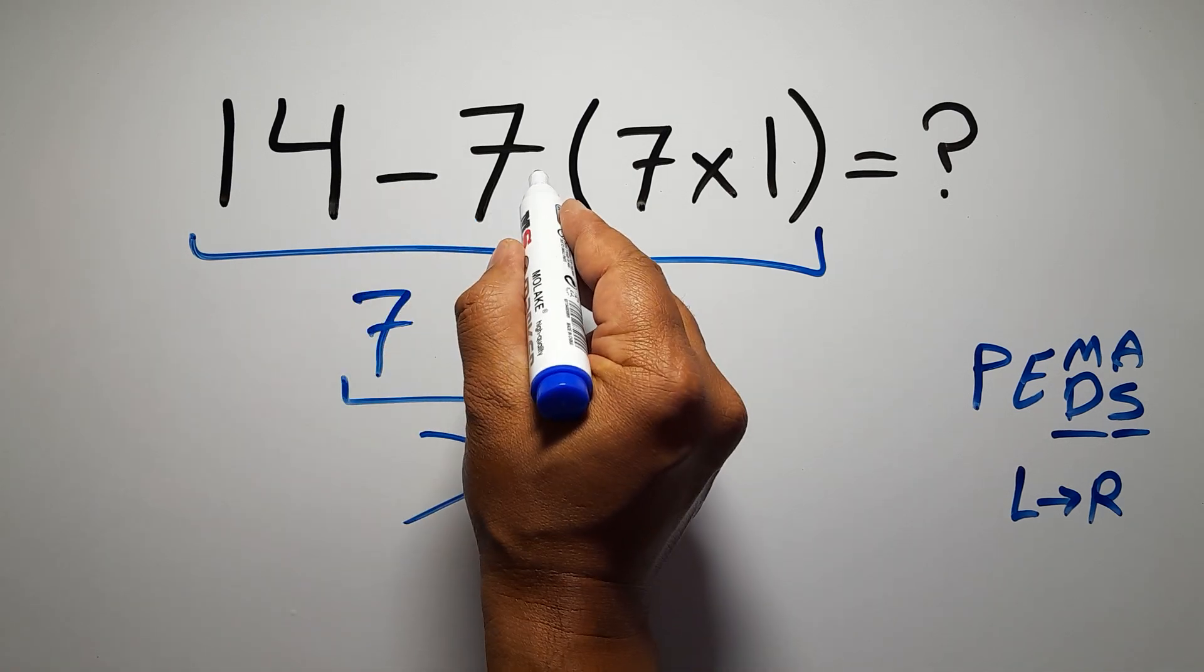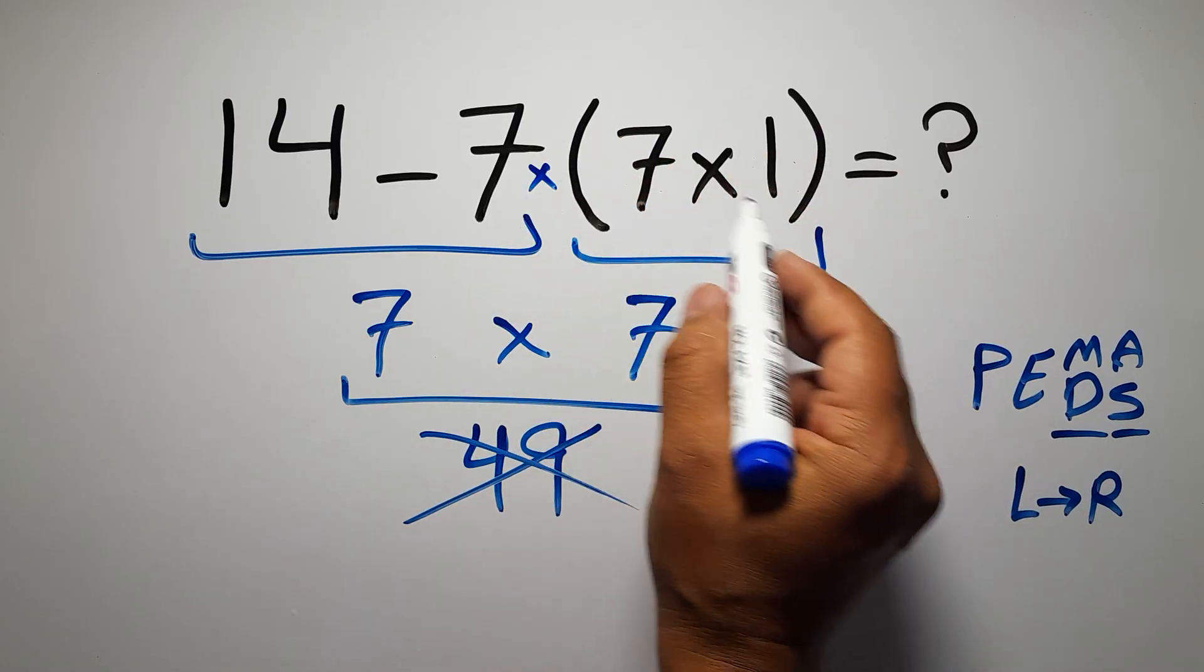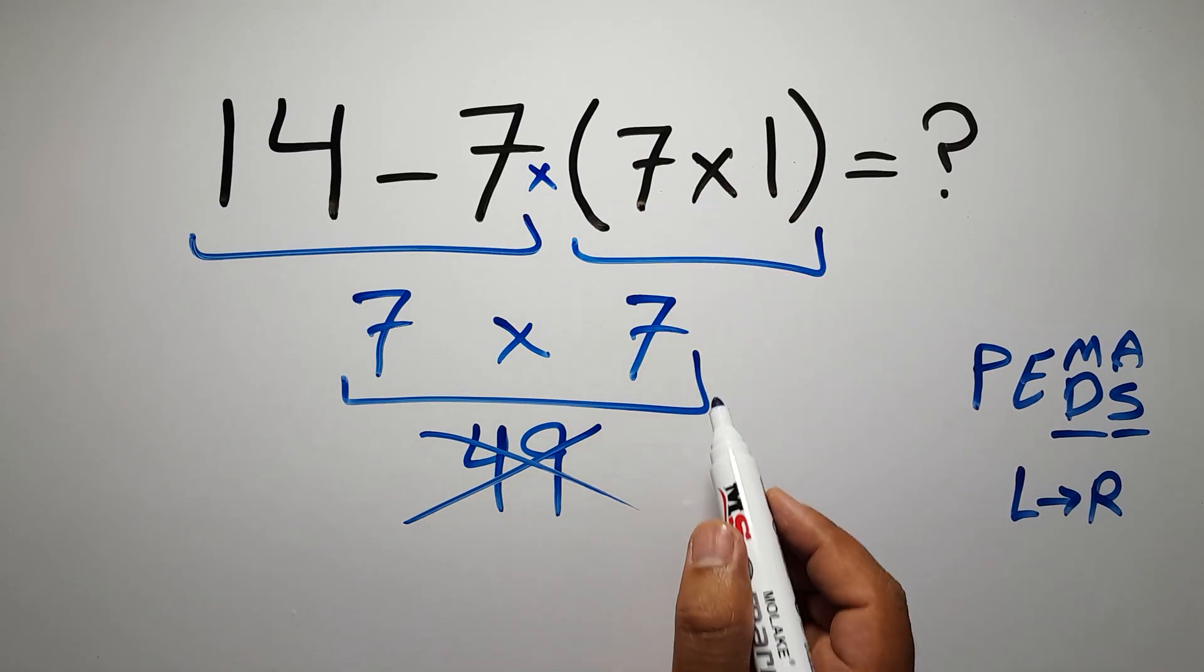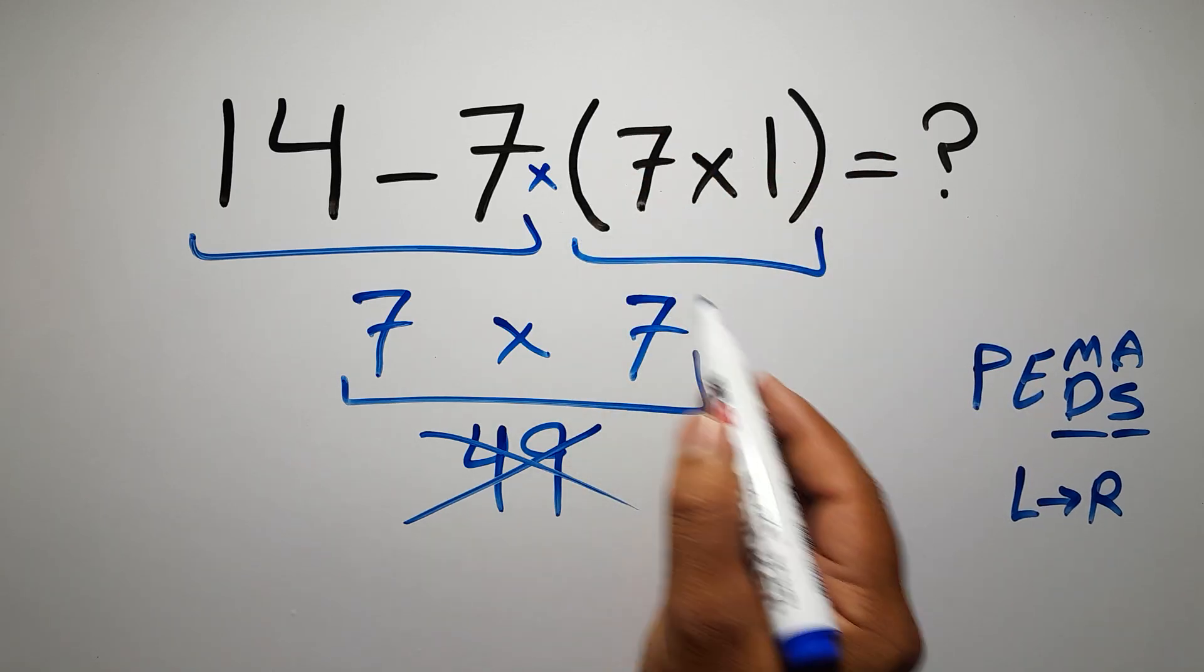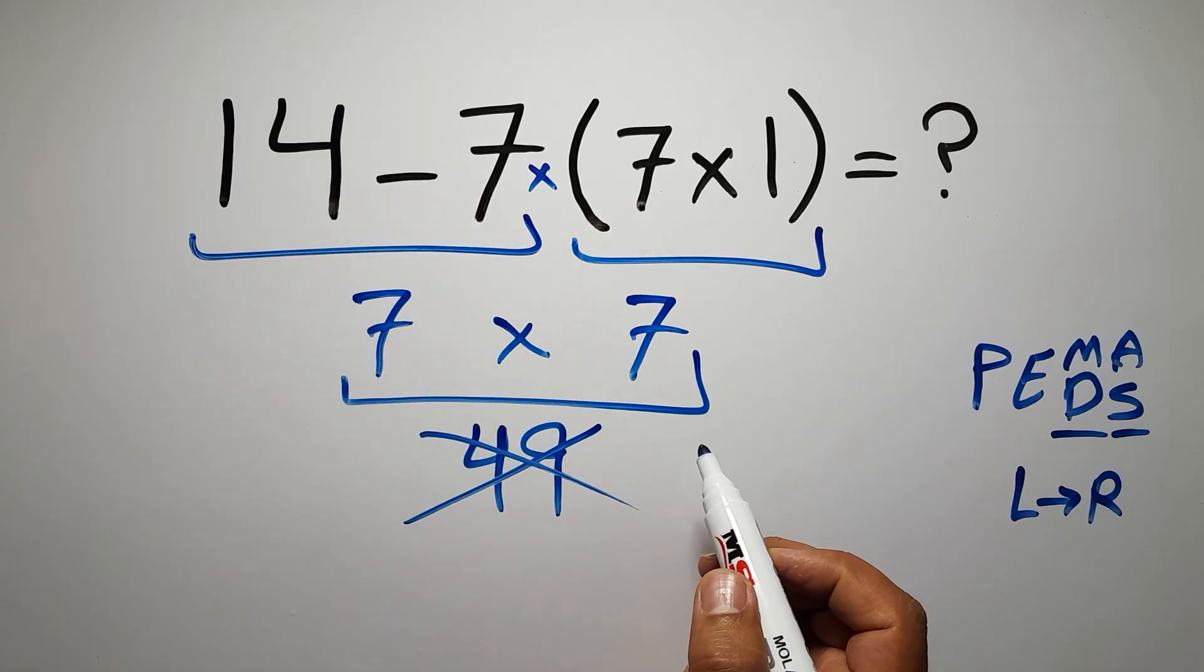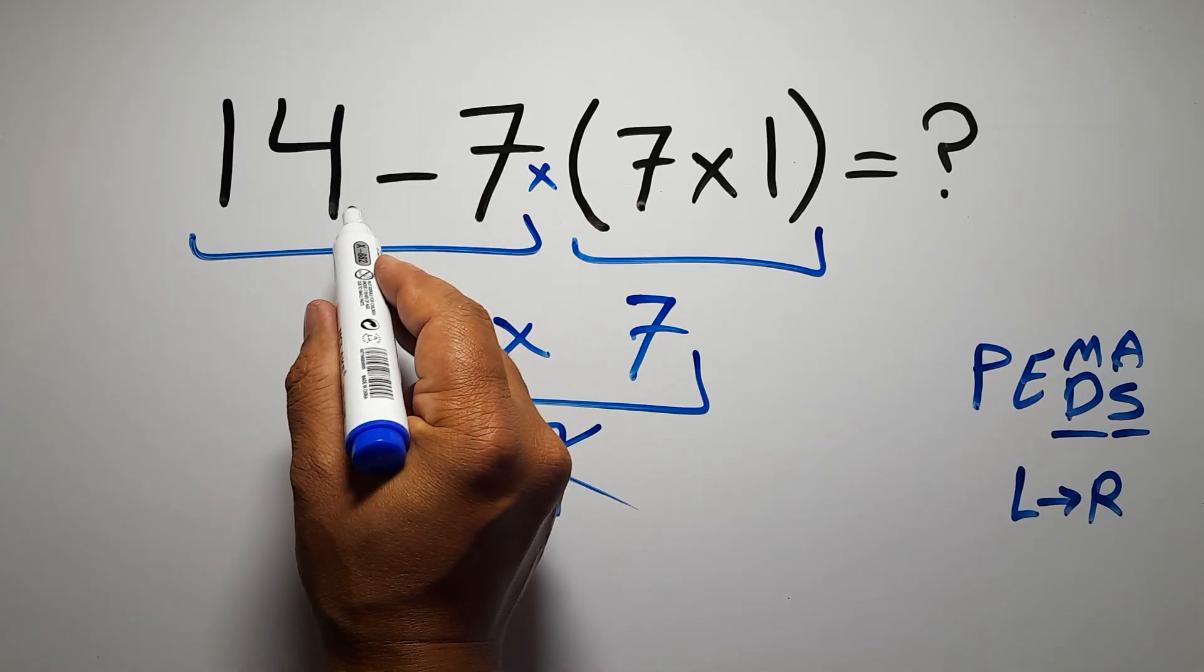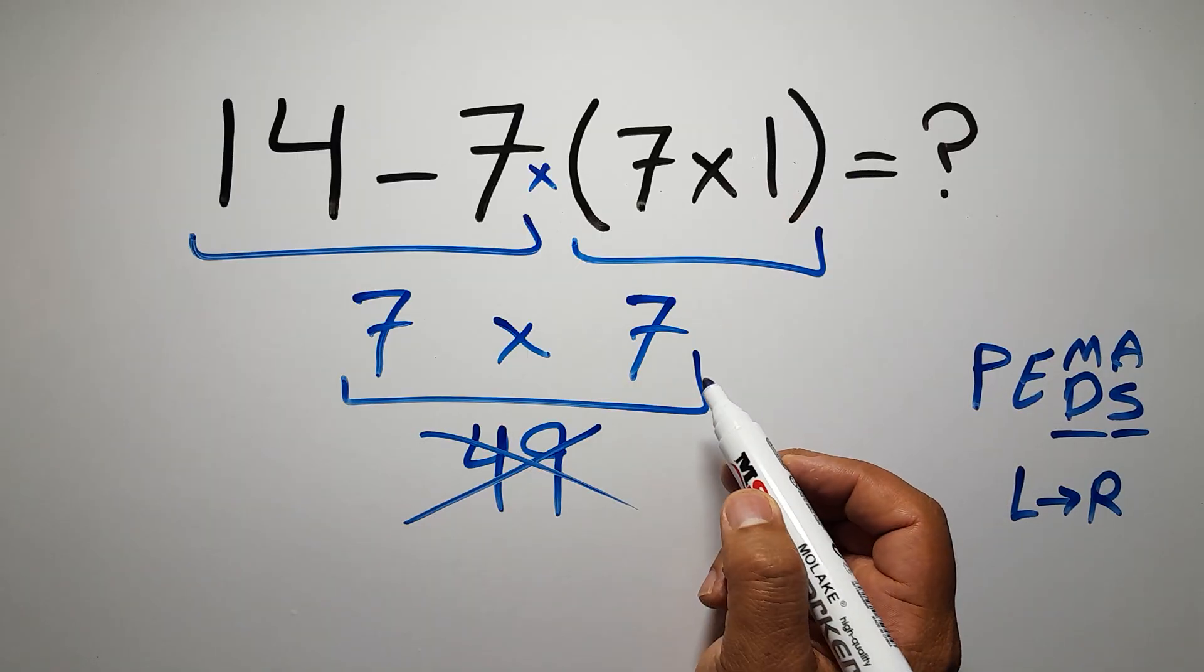So first we have to do this parentheses, then this multiplication, and finally this subtraction. If you do this subtraction before this multiplication or this parentheses, it is wrong.